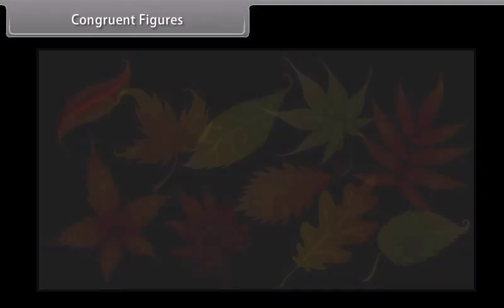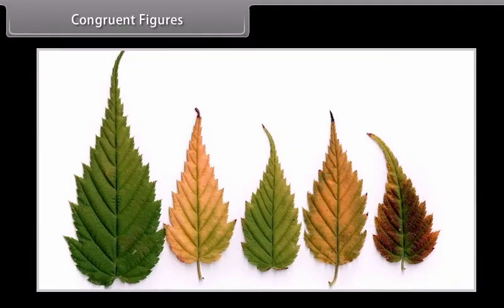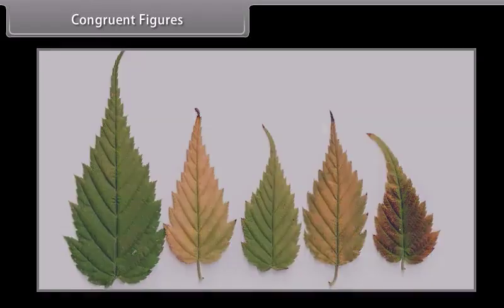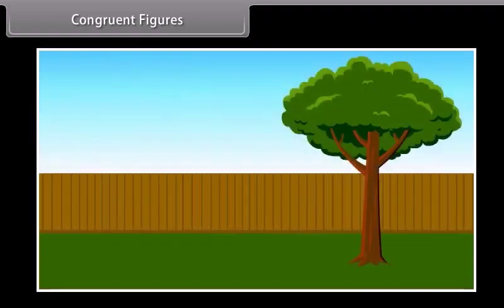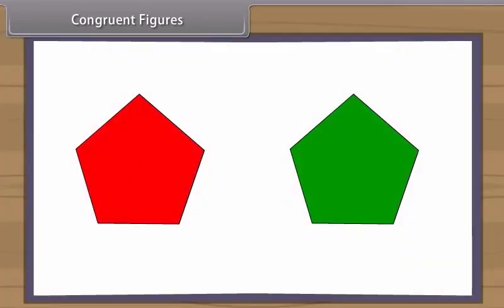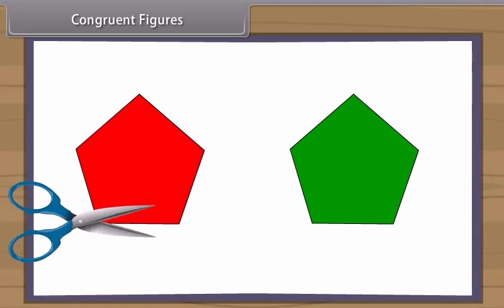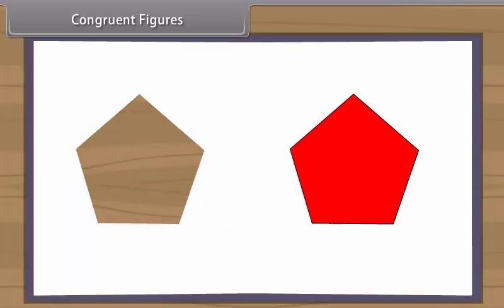You might have observed that leaves of different trees have different shapes, but leaves of the same tree have almost the same shape, although they may differ in size. The geometrical figures which have the same shape and same size are called congruent, and the property is called congruence. Congruent objects are duplicates of one another. If two mathematical figures are congruent and you cut one figure out with a pair of scissors, it will fit perfectly on top of the other figure.